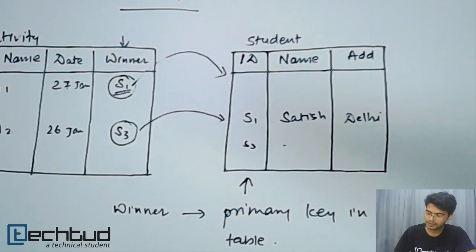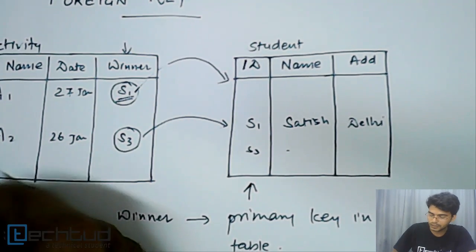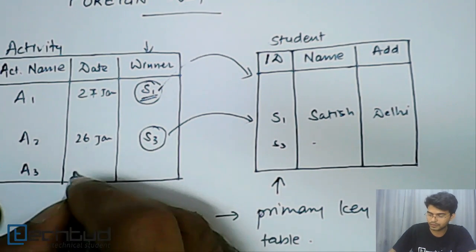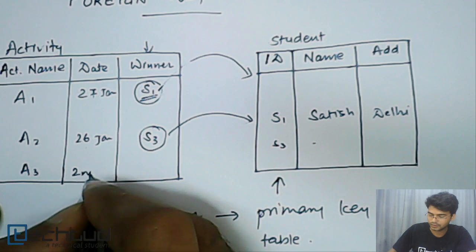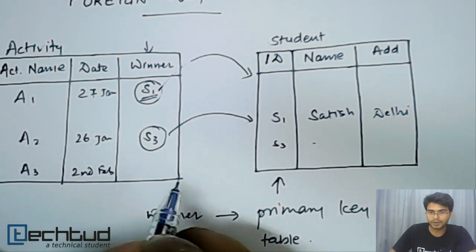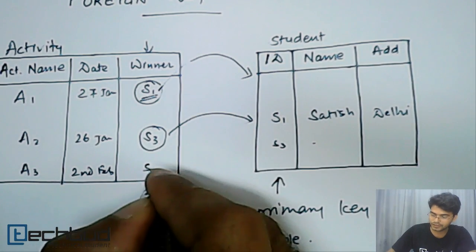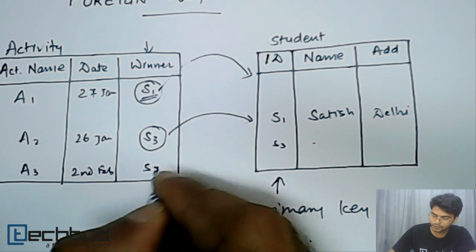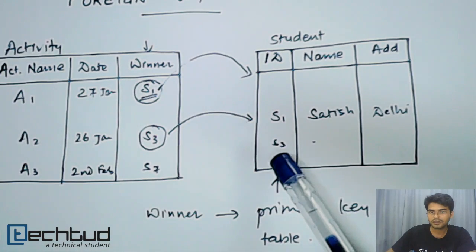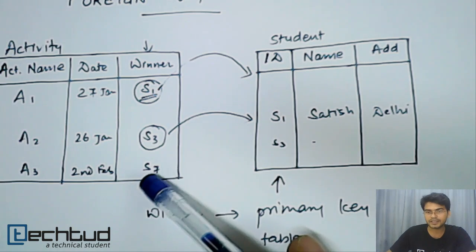Now I will first demonstrate the example. Let's say another activity happens. So this is A3 and it was let's say on sick and fell, and somebody wins. So the somebody who wins that should be present here, otherwise how? Let's say S7. So this S7 which I am entering in this winner column should be present in this student table. Otherwise I cannot enter this S7 here.